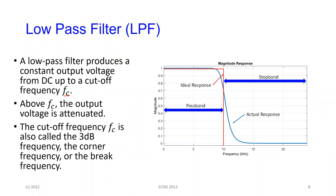The cutoff frequency is also called the 3 dB frequency, the corner frequency, or — when we talk about Bode plots — the break frequency, which is where the response literally breaks from going flat and starts to roll off. The more conventional term throughout our course will be the cutoff frequency.